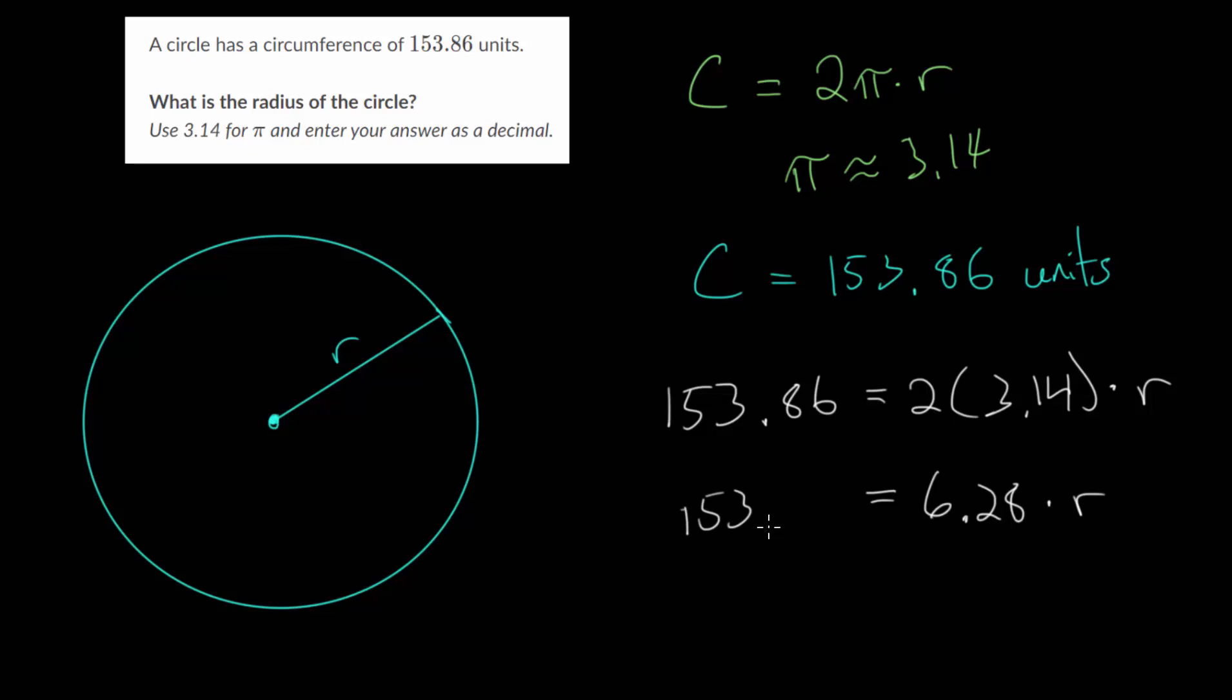To solve this equation for R, we just need to divide each side by 6.28. We're dealing with multiplication and we want to get R by itself. So we do the opposite of multiplying to solve the equation—we use division. Since 6.28 divided by 6.28 is just 1, we'll just get R on the right side.